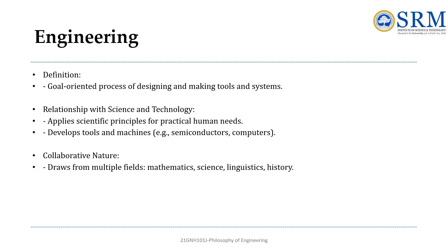Engineering is the practical implementer. Engineering is a goal-oriented process that designs tools and systems to address practical human needs. It applies scientific principles to build tools — for example, semiconductors and aircraft. The design of wind turbines involves mathematics for aerodynamic calculations, physics for understanding energy conversion, and art for aesthetic integration into landscapes. Engineering often pulls from diverse fields such as mathematics, linguistics, and history.